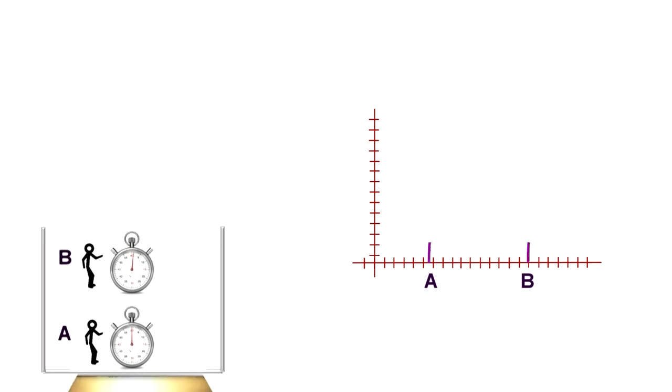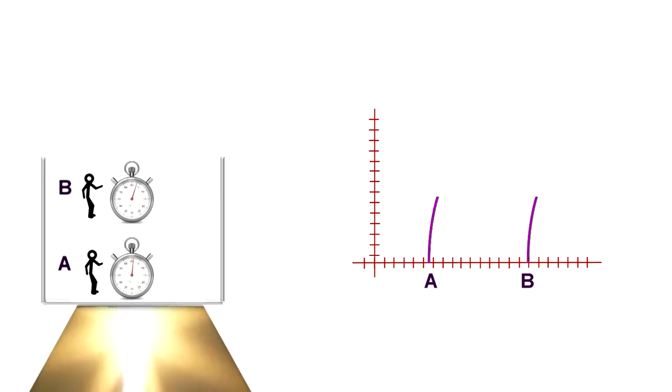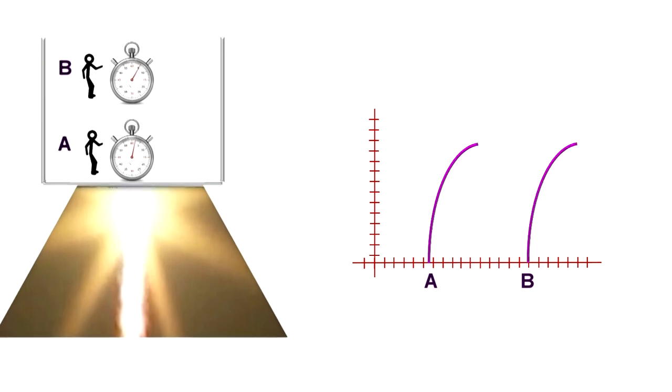As the elevator accelerates, the world lines on the space-time graph are not straight lines. They curve outwards, because their velocity increases with every second.